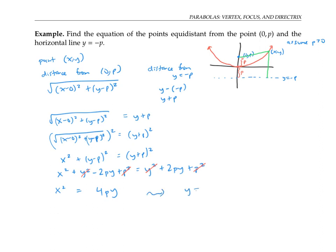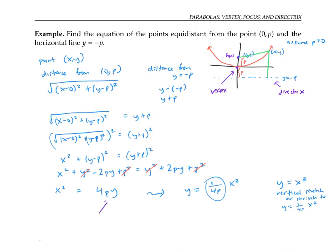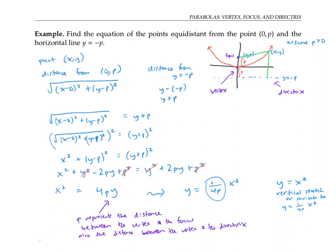I could also write this as y equals one over 4p times x squared. You might recognize this as the standard parabola y equals x squared, transformed by vertically stretching or shrinking it by a factor of one over 4p. The lowest point of the parabola is called the vertex, the point (0, p) is called its focus, and the line is called the directrix. The number p represents the distance between the vertex and the focus, and also between the vertex and the directrix. This form of the equation may be more useful than y equals ax squared, where that distance p is more hidden.